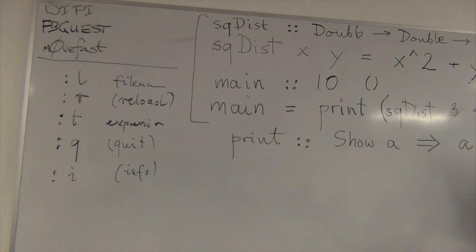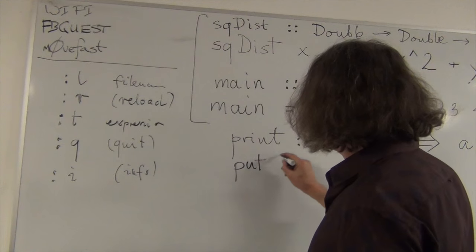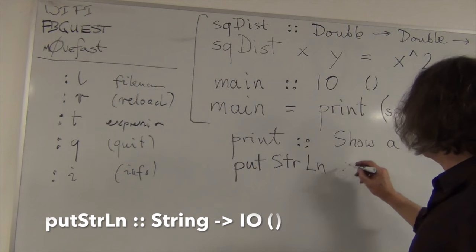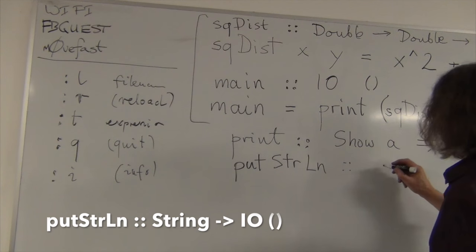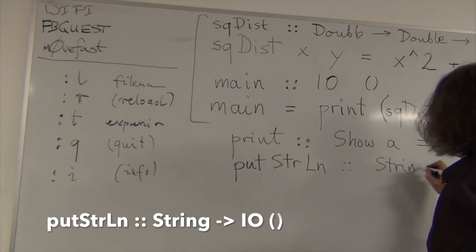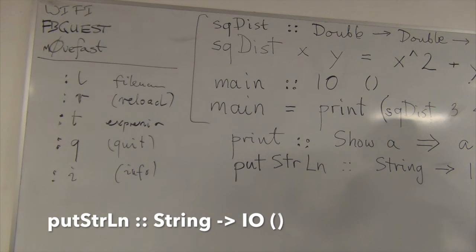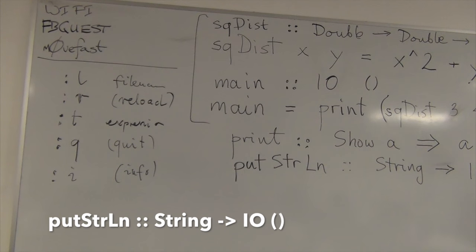So a function that's called in main has to have this funny type. And there are a few basic functions that do this. One is print, the other is putster, or putster line, even more common, right? And what's the signature of putster line? Putster line is string to IO unit, single arrow, IO unit. Okay.